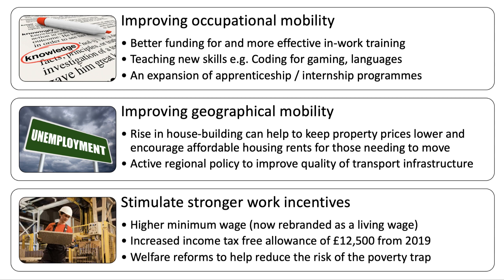The third supply-side approach is to improve work incentives. Some people may be reluctant to take a job because they don't think the work pays sufficiently. A higher minimum wage — now rebranded as a living wage — could help stimulate labor supply. Some economists favor increasing the income tax-free allowance so people keep more of what they earn. Welfare reforms, such as some form of welfare cap or conditionality — requiring active job search to claim Universal Credit — are also options governments have favored.